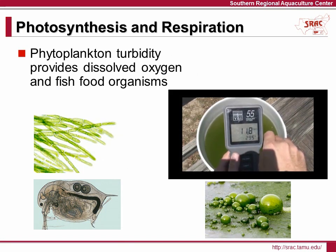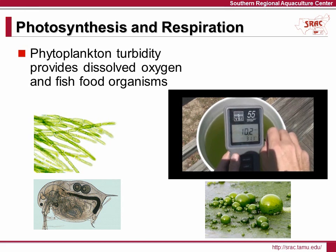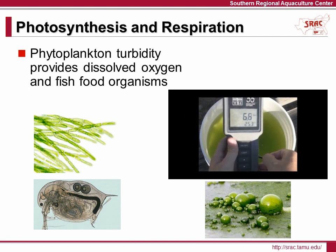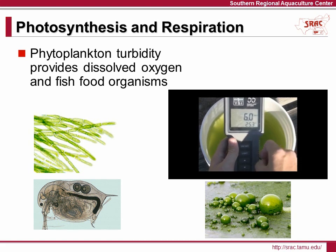Photosynthesis is another important biological process that students must know and understand. Photosynthesis plays a critical role in aquaculture, providing most of the oxygen that the fish need to survive. The downside to having a lot of algae is that when it respires at night, it removes much of the oxygen present. Fish farmers must continually monitor oxygen levels and be prepared to add oxygen with aerators when necessary.